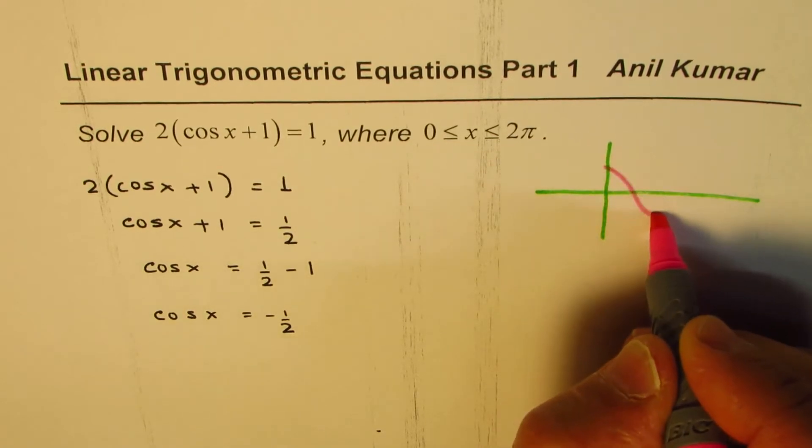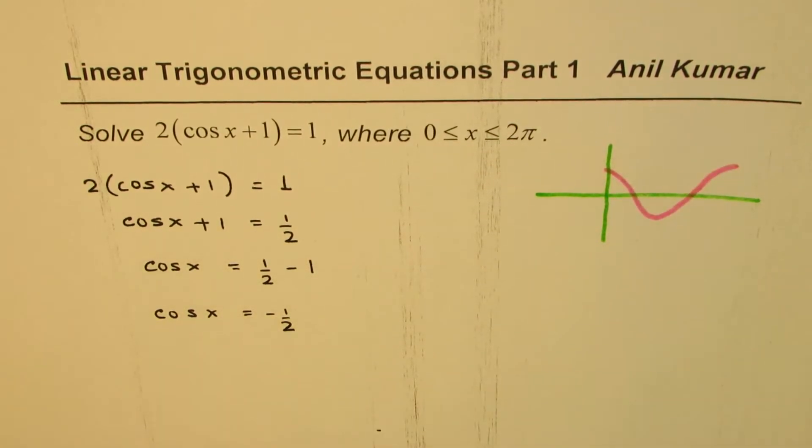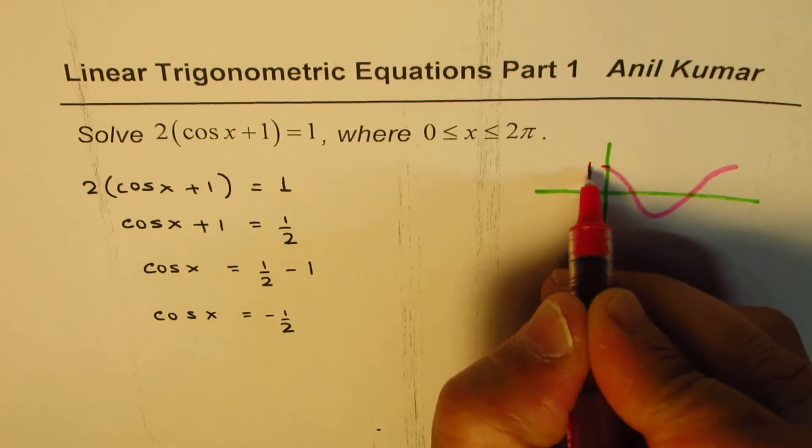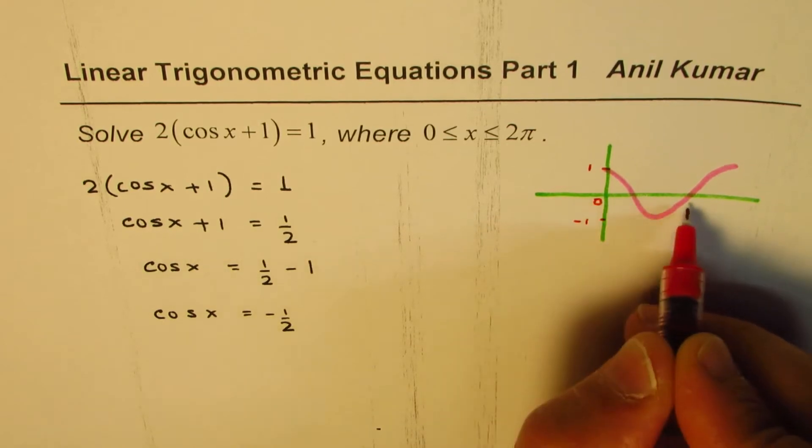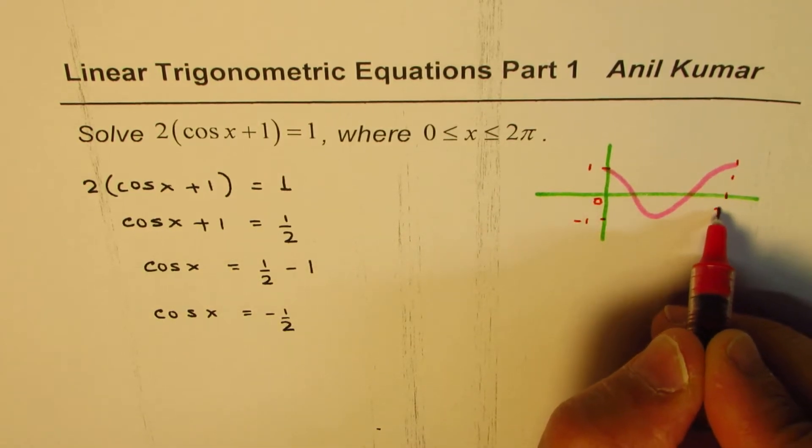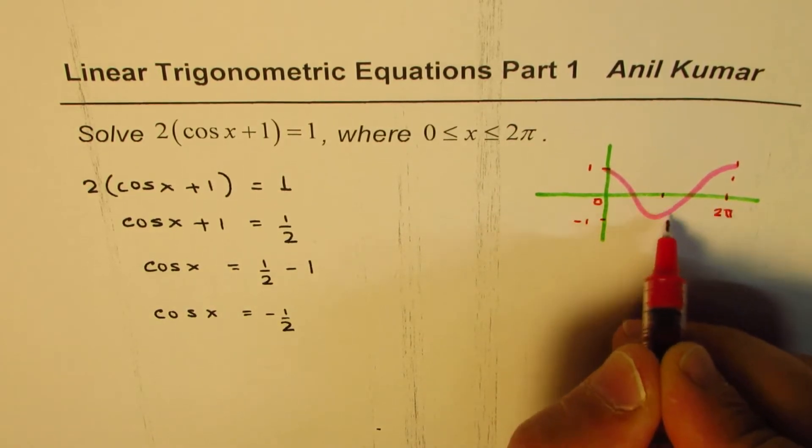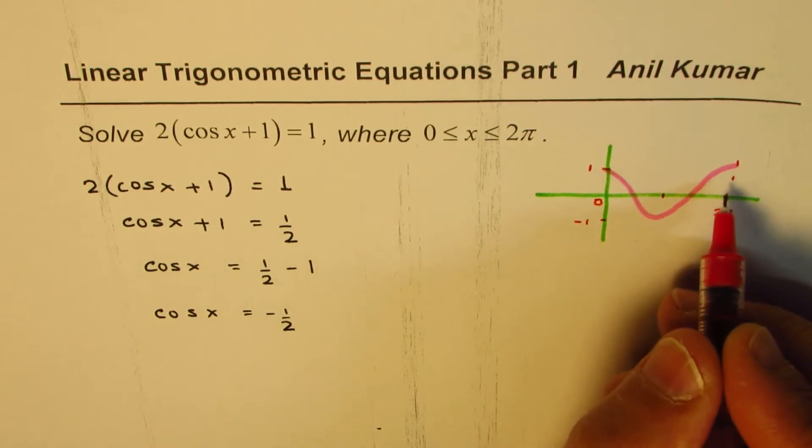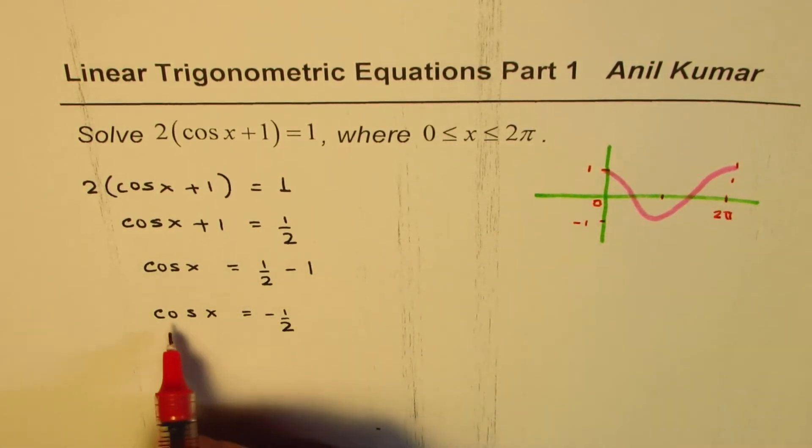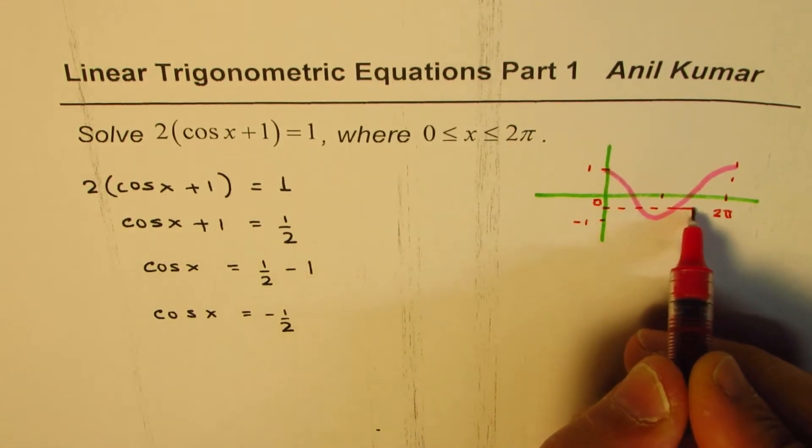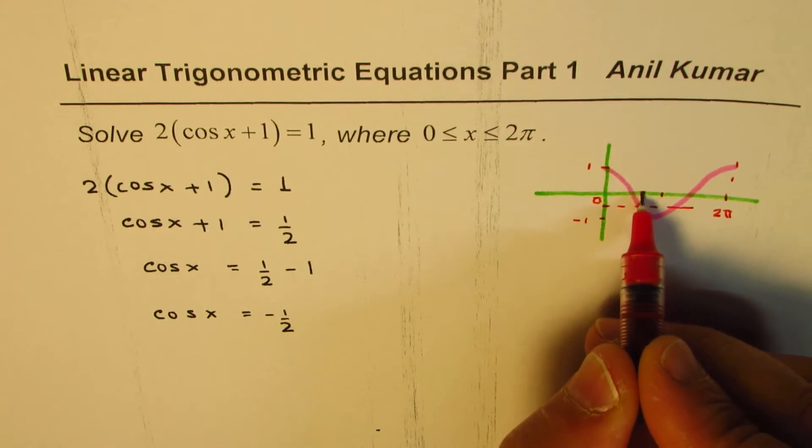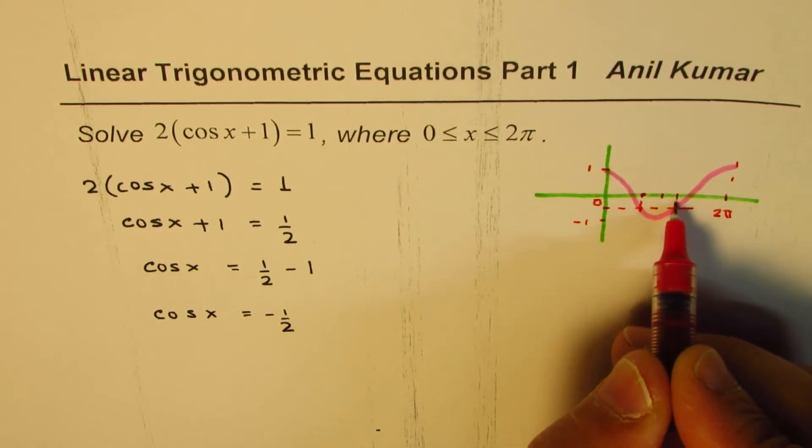Cos x is a function which starts with 1, goes to -1, and then back to 1 within the domain 0 to 2π. It goes from 1 to 0 to -1 as you move from 0 to 2π, and then back to 1. We're looking for cos x = -1/2, which is somewhere here. What we get here is two solutions.